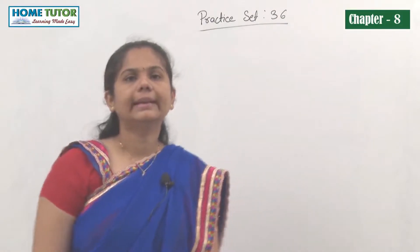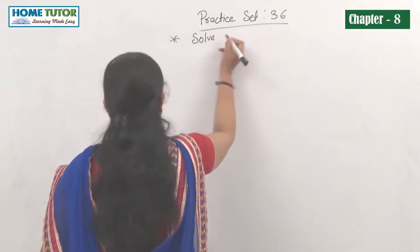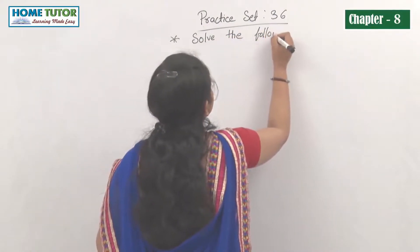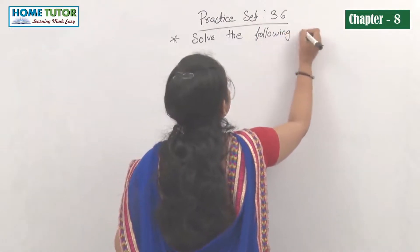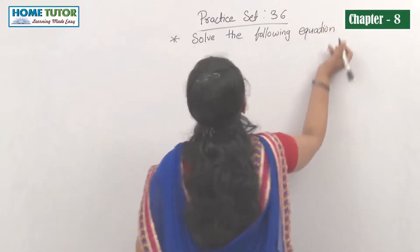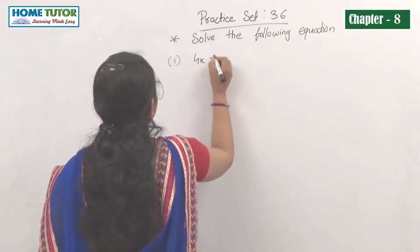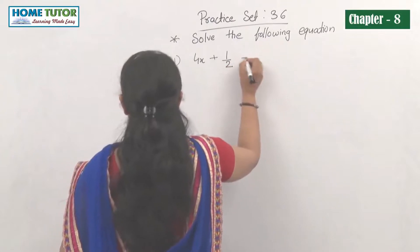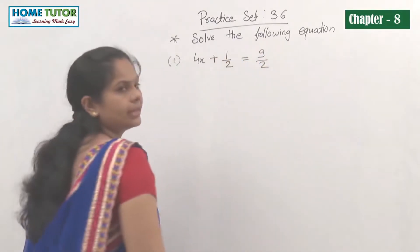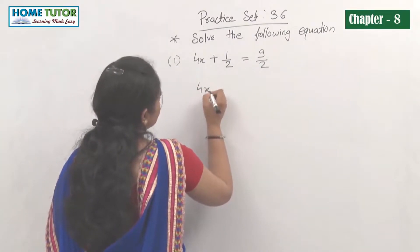Now the next question: solve the following equations. The first equation given is 4x plus 1/2 equals 9/2. We have to solve the equation, so let's solve it. This is 4x.